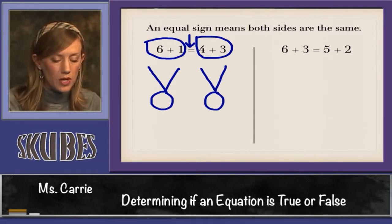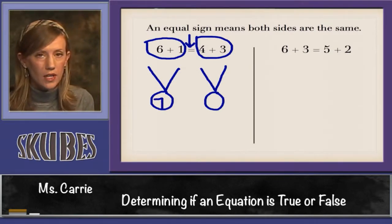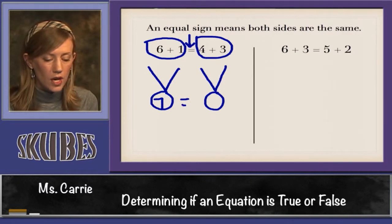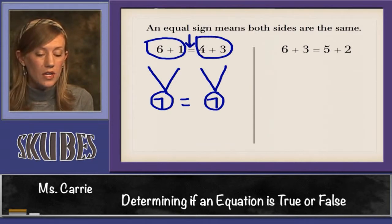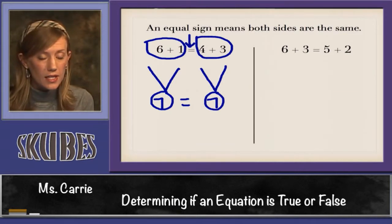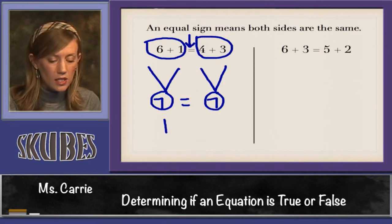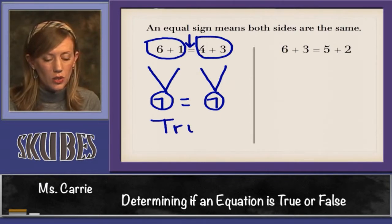We know that 6 plus 1 is 7, so I'm going to write 7 here, and we know that 4 plus 3 is 7. So let's look at our answers. Is 7 equal to 7? Yes it is. So this is true. This is correct.